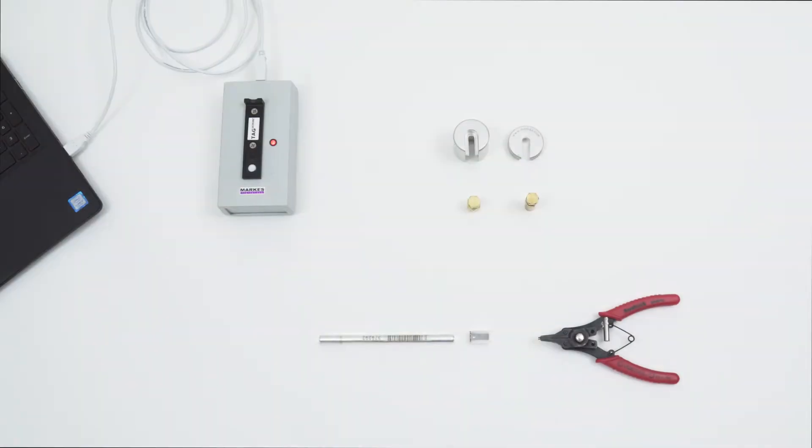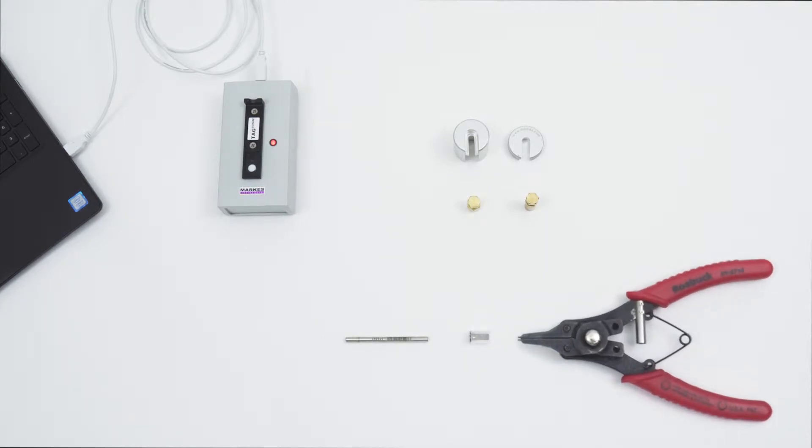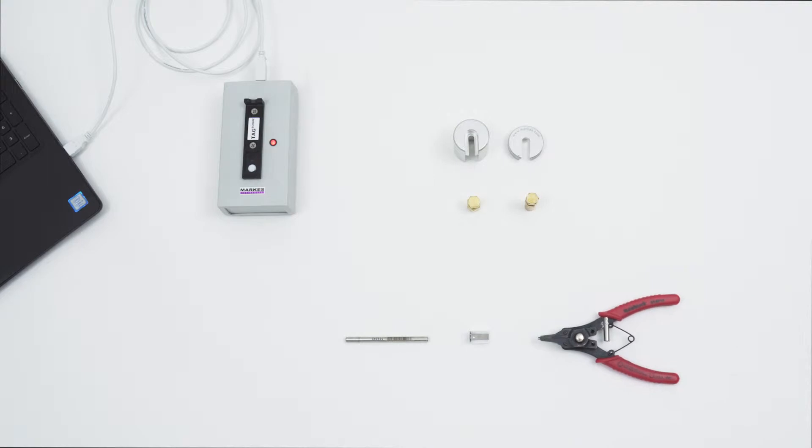You will need a stainless steel tube, a TubeTag, a TubeTag fixing removal tool, a pair of TubeTag compatible storage caps, a TagLock tool and a TagScribe connected to a Windows compatible device or an automated Markes thermal desorption system loaded with the MIC software.